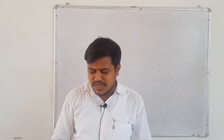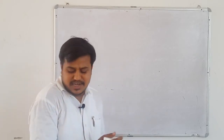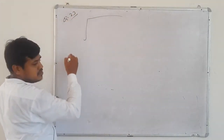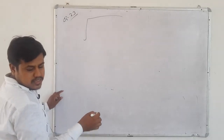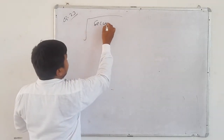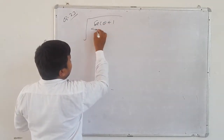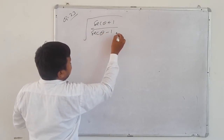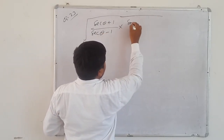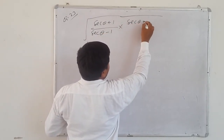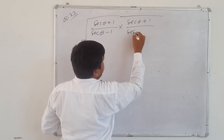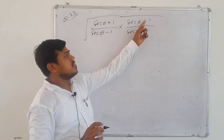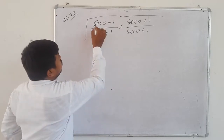Question number 23. Easy — we need to rationalize inside the root. Question 23: √[(sec θ + 1)/(sec θ - 1)]. Rationalize by multiplying with (sec θ + 1)/(sec θ + 1). The sign changes from minus to plus for rationalization.